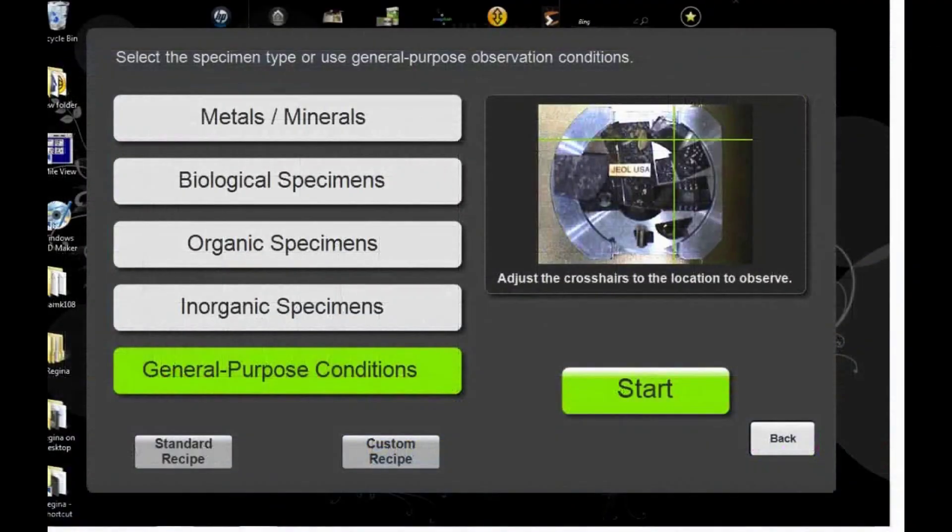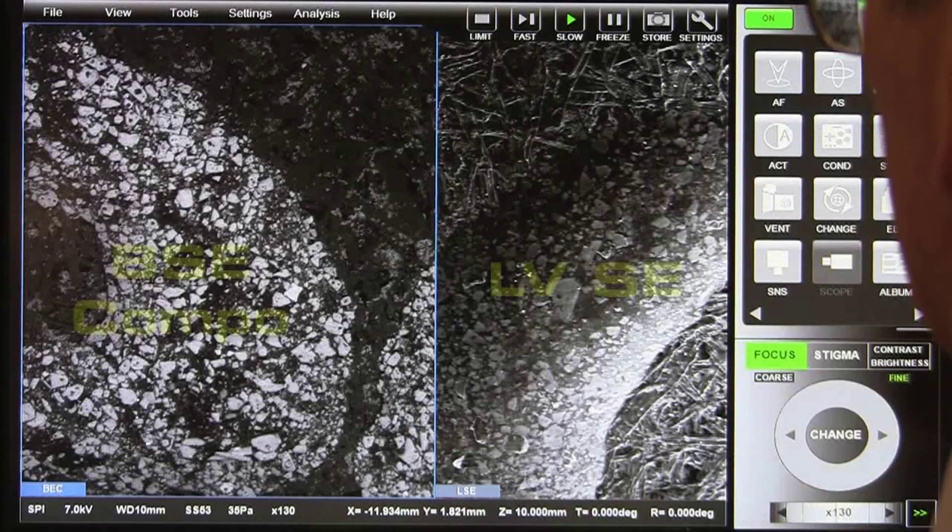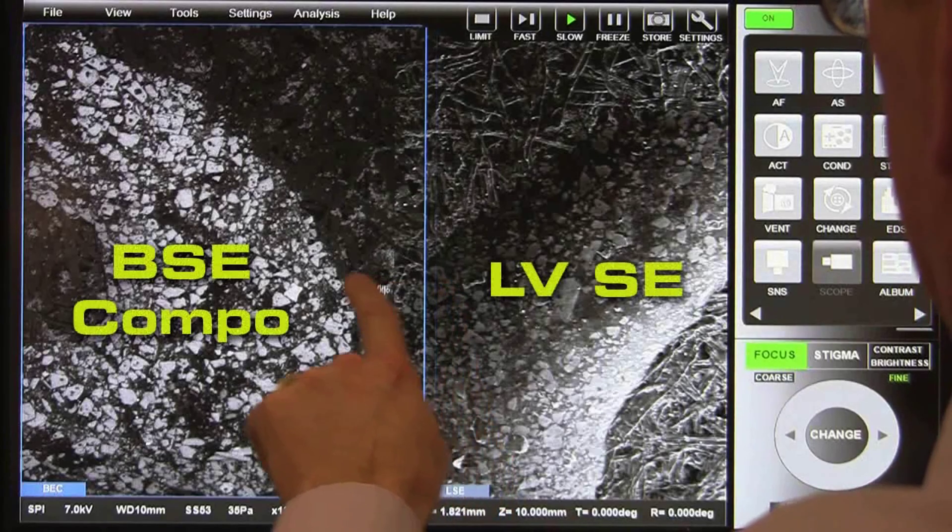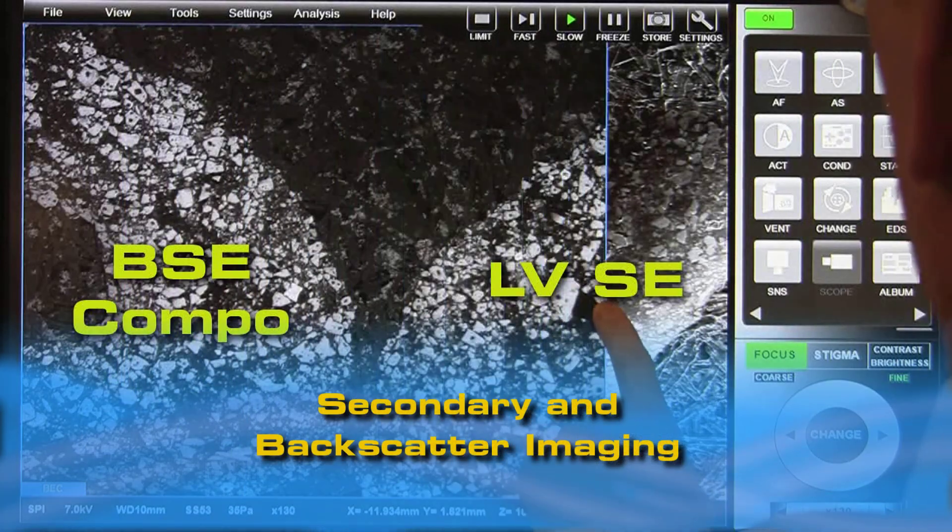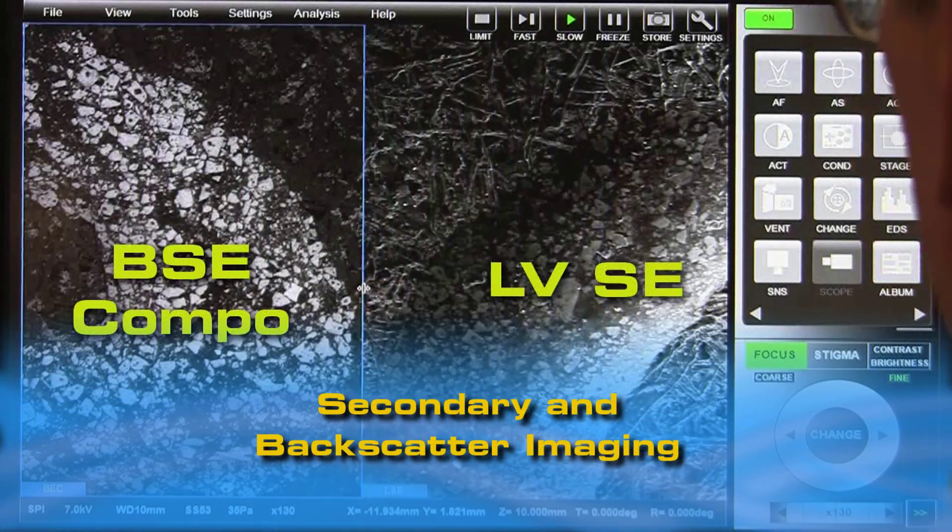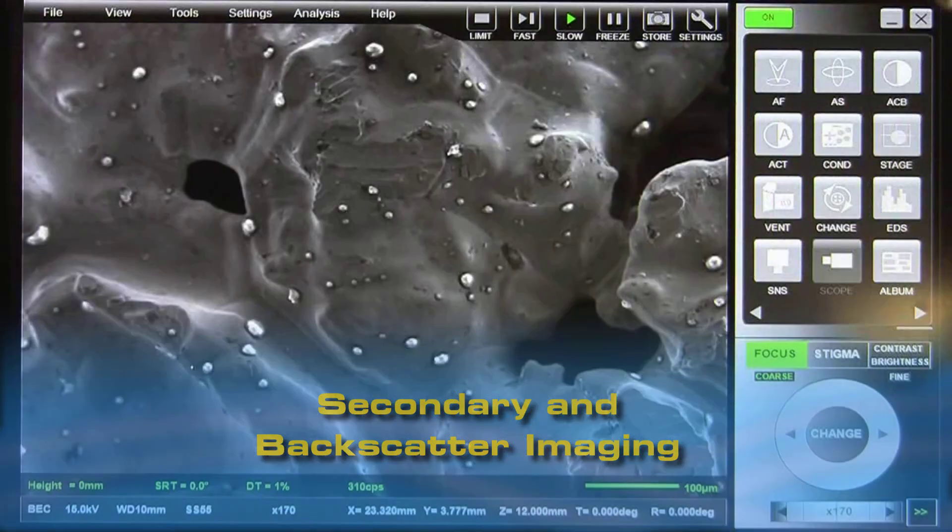Operating parameters can be saved in a recipe and recalled for future use. The InTouchScope secondary detector allows fine imaging of topography, while the backscatter detector clarifies compositional differences. The user can easily compare images on screen.